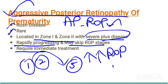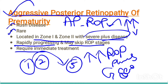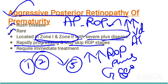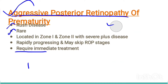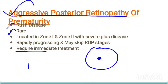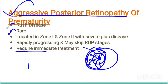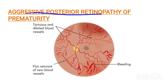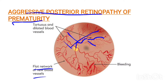In APROP, severe plus disease shows increased venous dilatation and arteriolar tortuosity, involving zone 1 and zone 2. Looking at the retina image showing the optic disc: in zones 1 and 2, there is involvement without the typical ROP stages, with severe tortuosity and venous dilatation. Only the vascular involvement is very severe. You can notice severe tortuous and dilated vessels, and a flat network of blood vessels.